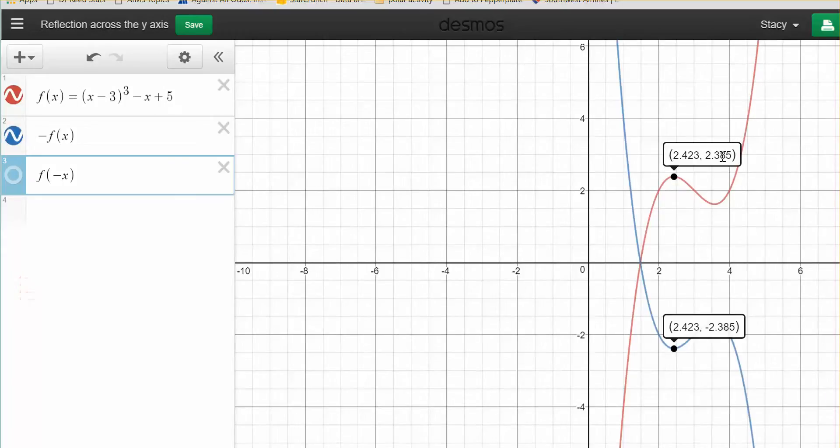And notice the y-coordinate. So up here, the red function was a positive 2.3, and down here, when I multiplied the function by a negative, my y-coordinate is negative 2.3. Now, I took that one away.